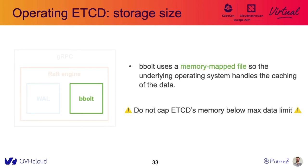One thing you should know about bbolt is that it uses special options when opening files called memory-mapped files. This method means the underlying operating system will cache the files in RAM. If you are using 8 gigabytes as the data limit, bbolt itself may take up to 8 gigabytes of RAM. So please do not cap etcd memory below the max data limit.